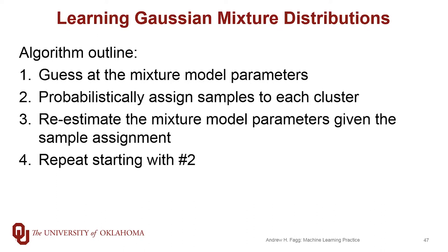Once we finish the assignment, we re-estimate the mixture model parameters given that assignment, and then we repeat with number two, and we continue through that loop until we've reached a point where we aren't making any more changes to our model.